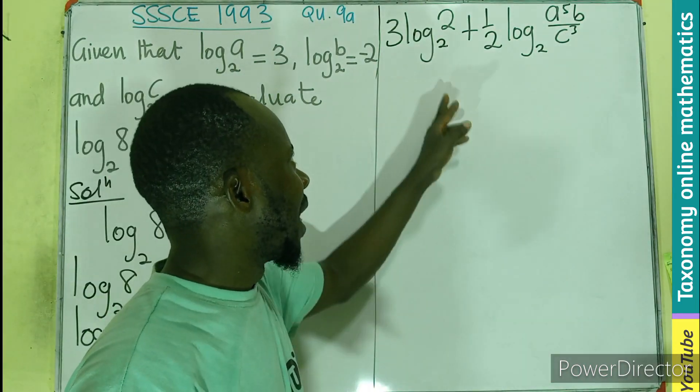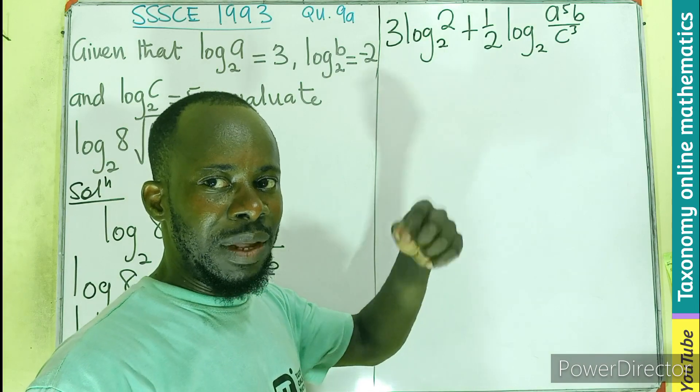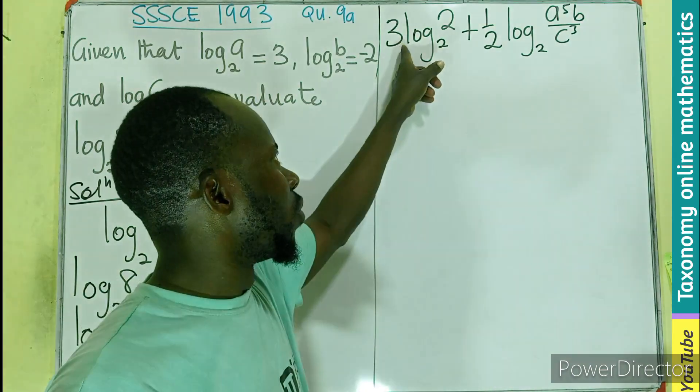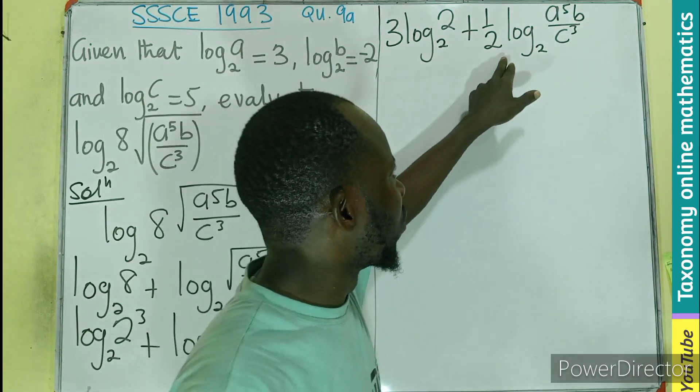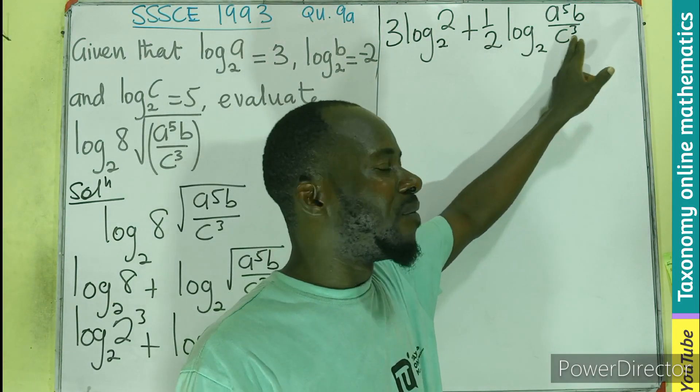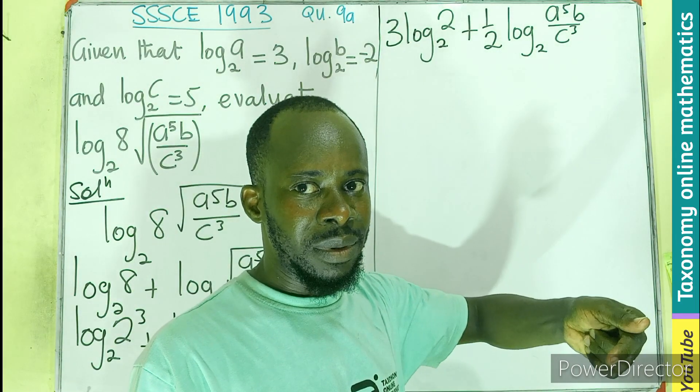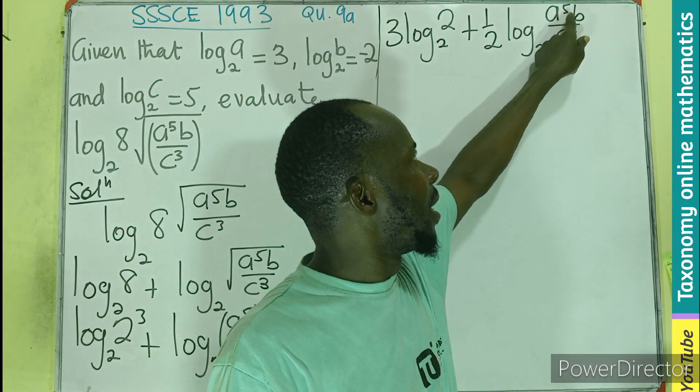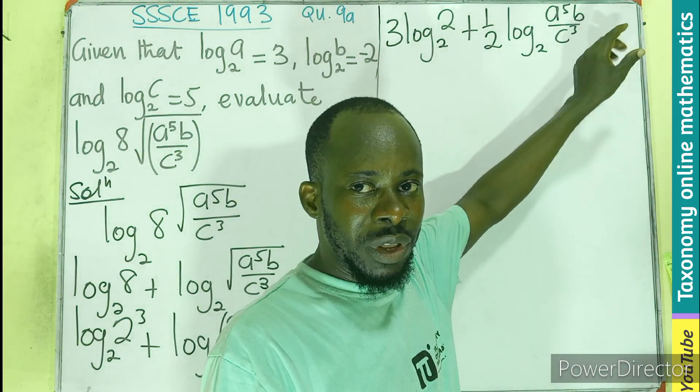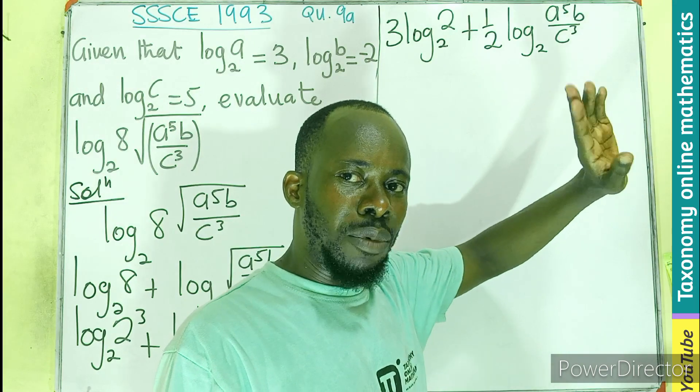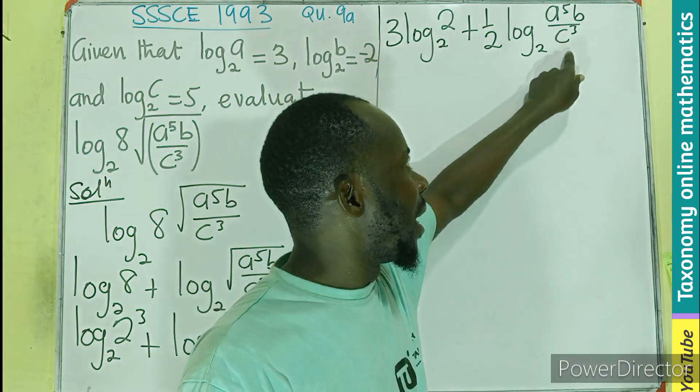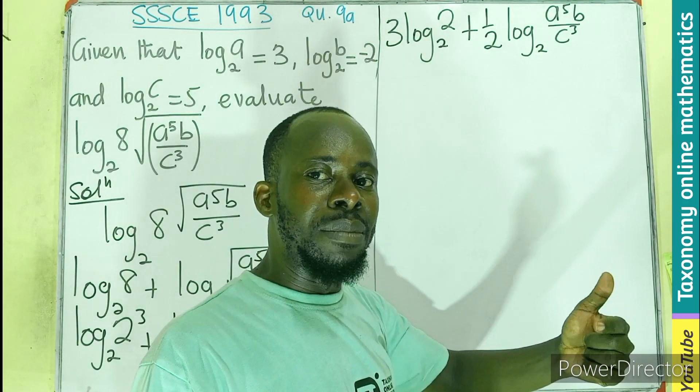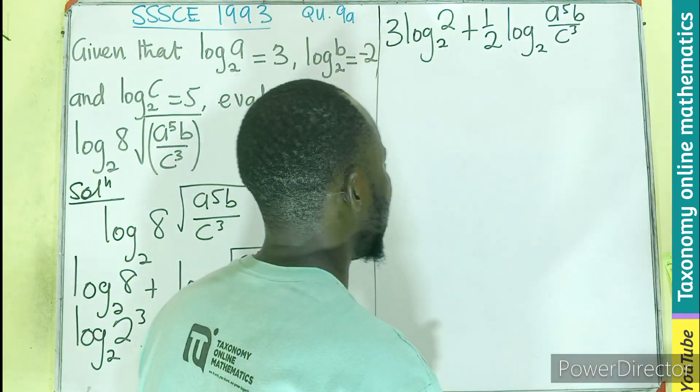Good. You can see that a logarithm of a number to the same base gives you 1. So this is going to be 1 times 3, that would be 3. In the case of this, this half is multiplying everything happening to that logarithm. Then, this is A times B, which means multiplication, and multiplication means addition. C exponent 3 is also dividing, meaning it is also going to be a subtraction.